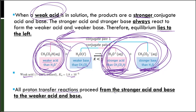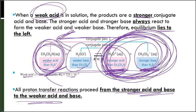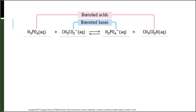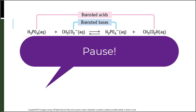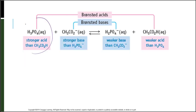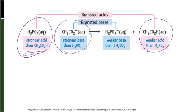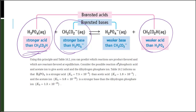Pause the video and figure out who the stronger acid and base are, and then decide product or reactant favored. Looking at the Ka values, H3PO4 is the stronger acid compared to acetic acid. Comparing the Kb values, the other species is the stronger base. Knowing that, we can predict a product-favored reaction — the equilibrium pushes to the right, and K is greater than 1.